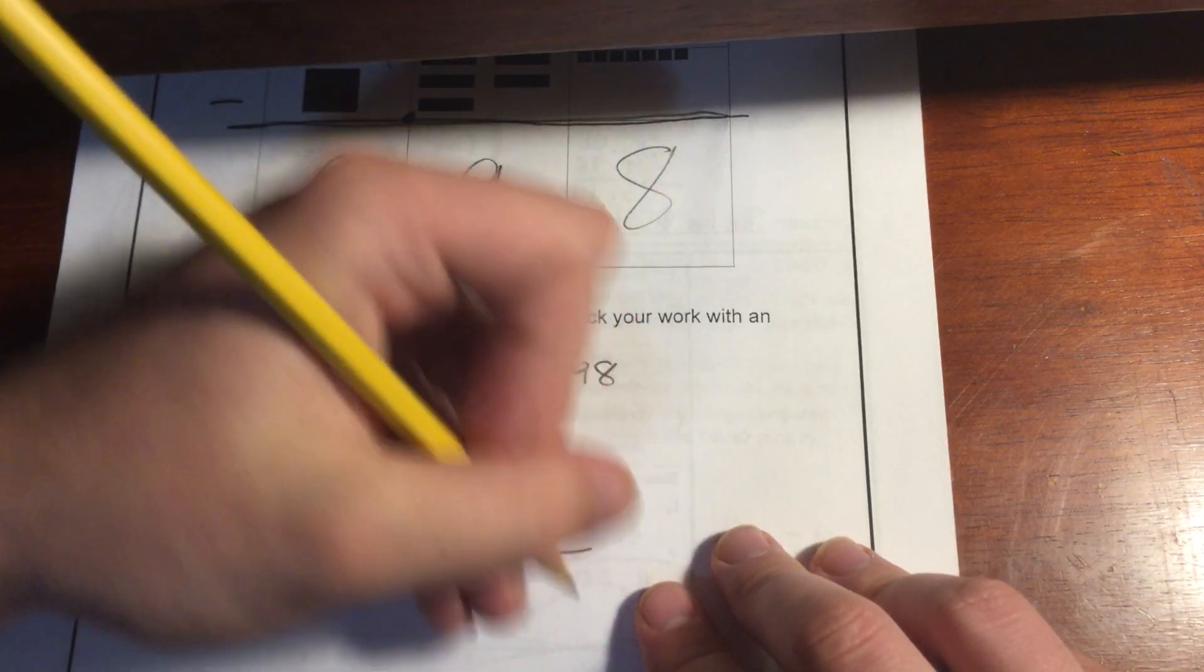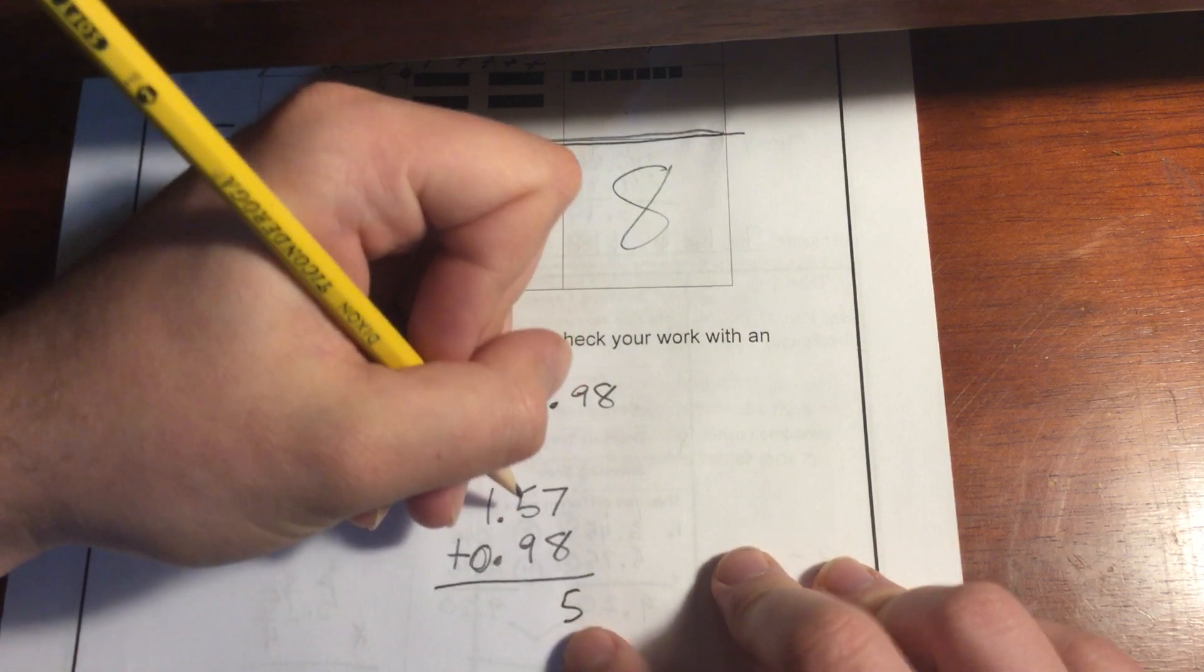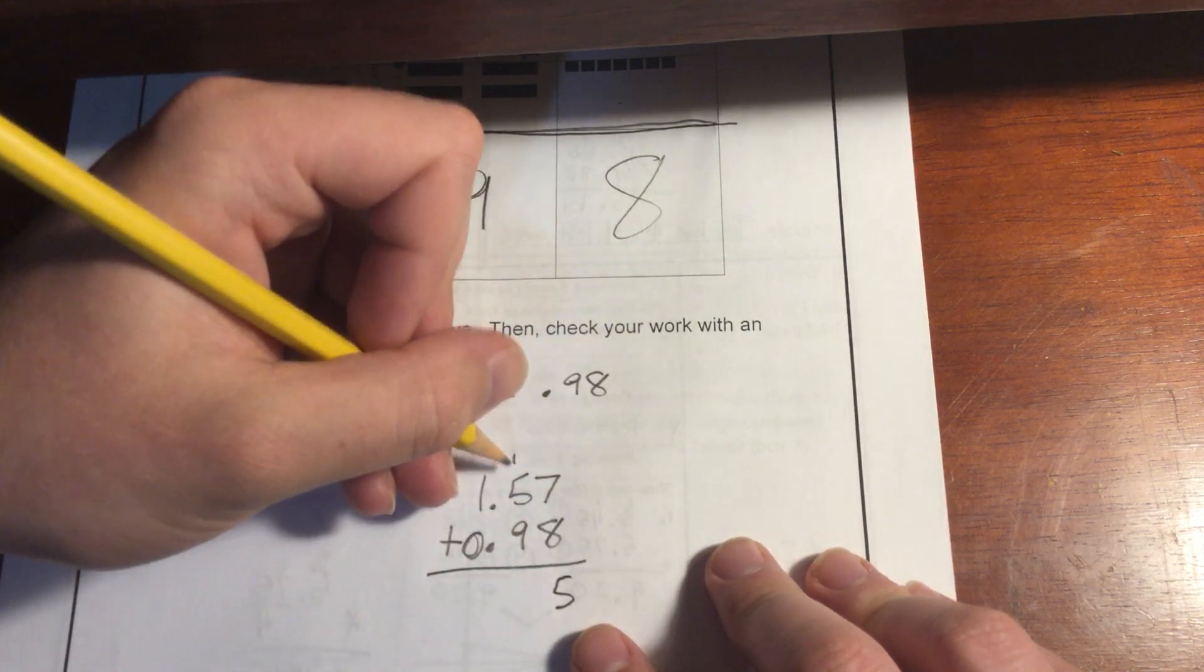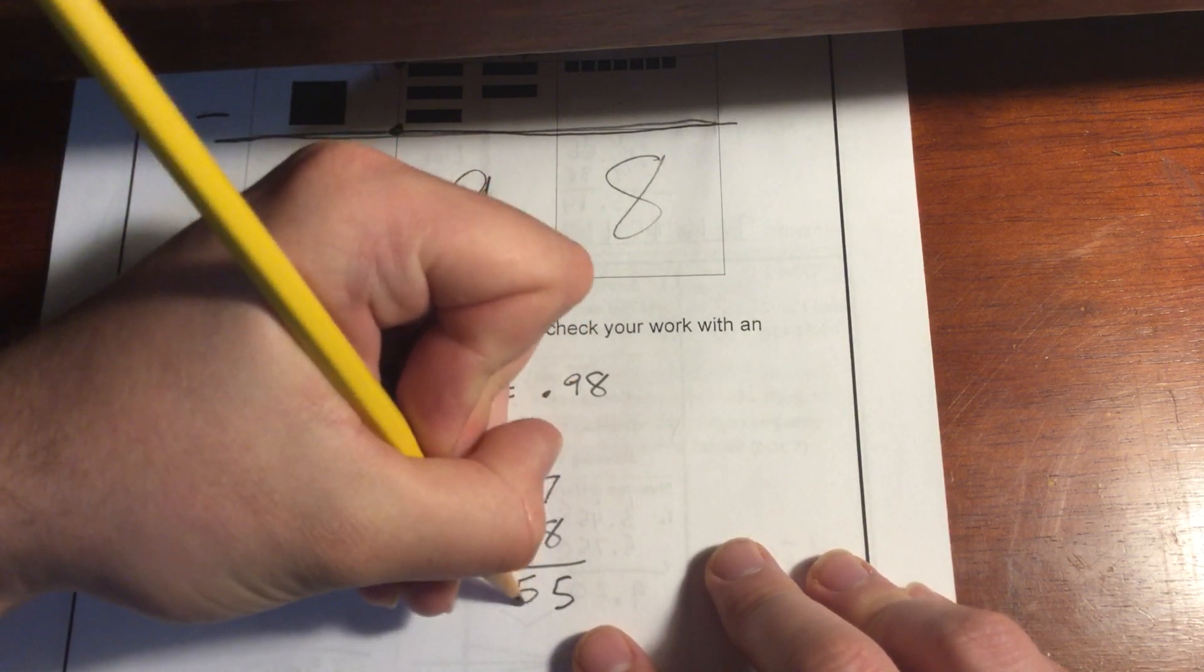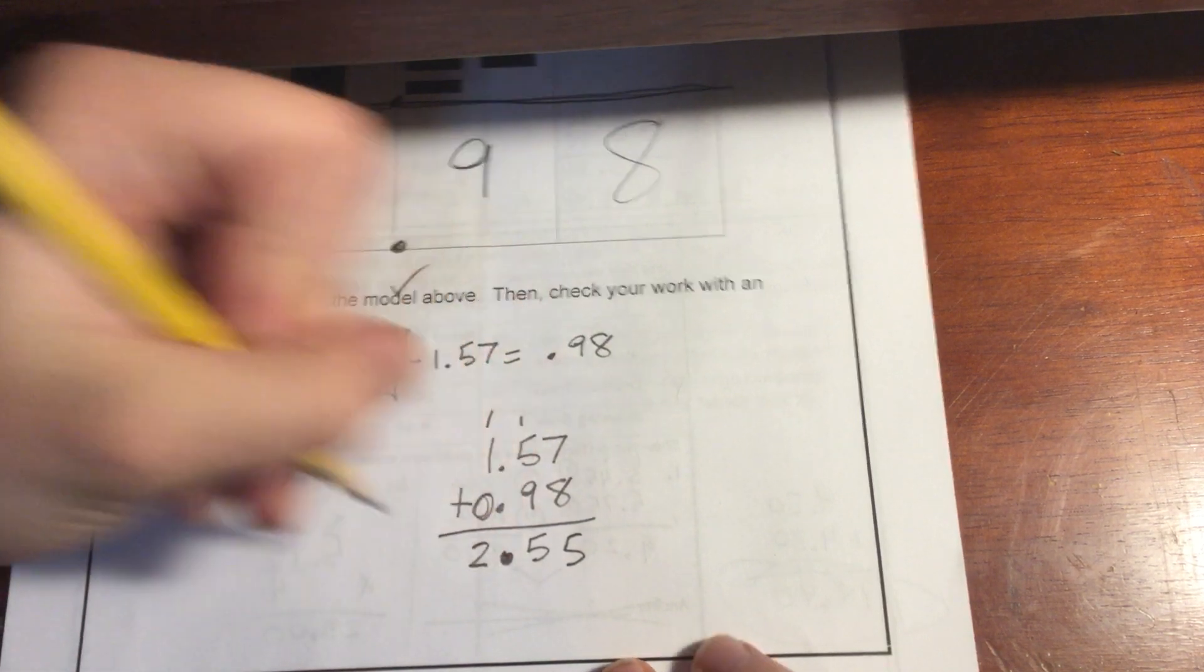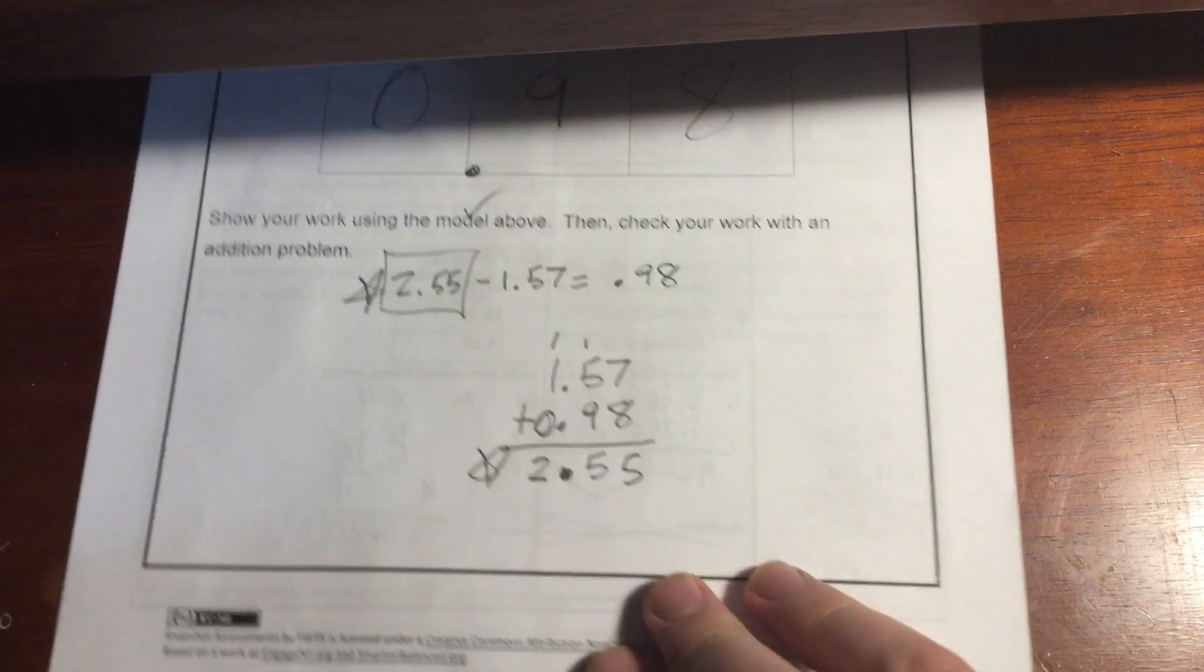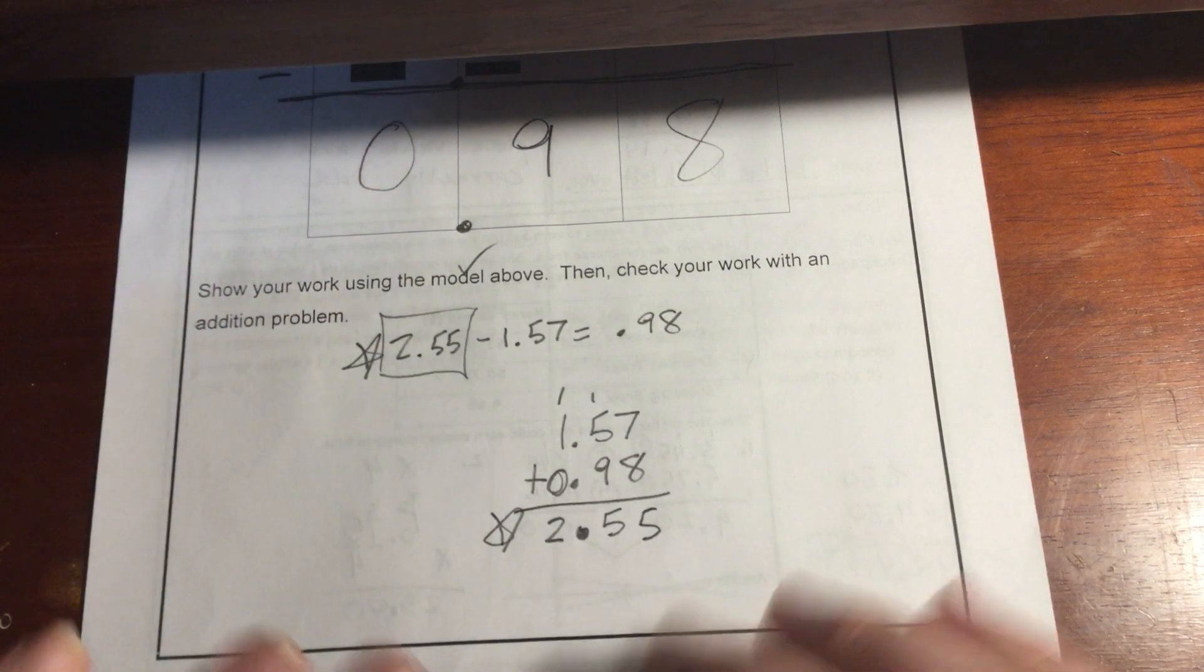Seven plus eight is going to give me 15, regroup that five or leave the five, regroup the one. One plus five gives me six plus nine is also going to give me 15, regroup that one. I'm going to place my decimal point now. And then one plus one gives me two. I see that that number is the same as my original number I was taking that 1 and 57 hundredths away from. So that tells me that we did it correct.